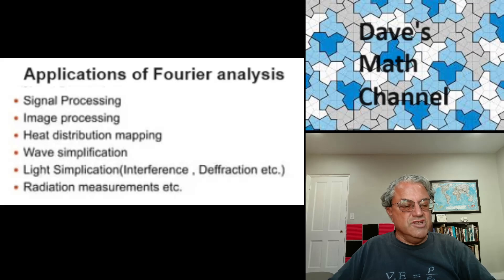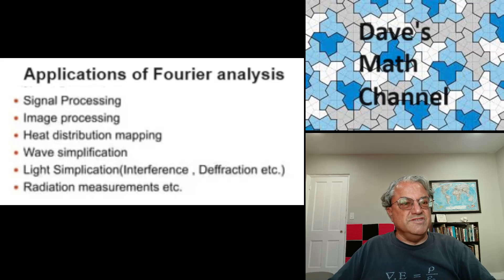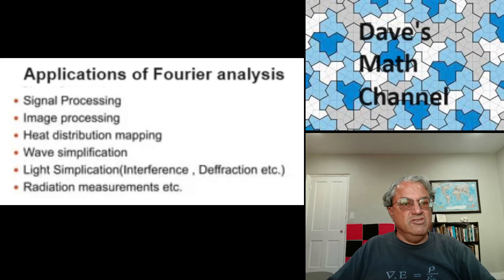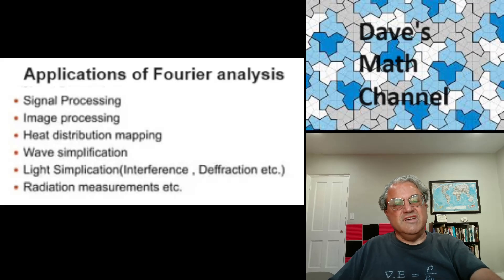Fourier lived in the late 18th and early 19th century. I just wonder what he'd think about the world if he could see it today. There are so many applications all over the place in science and engineering of his ideas — Fourier series and Fourier transforms. I don't think our modern society could exist without it. He'd just be totally amazed if he could see all the applications of his ideas to today's society.